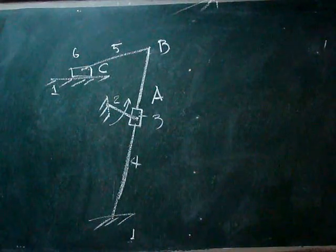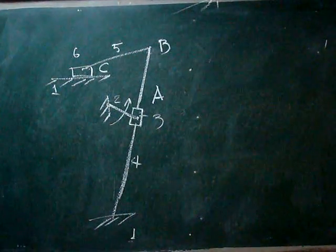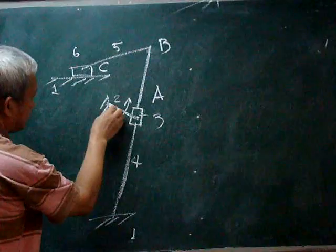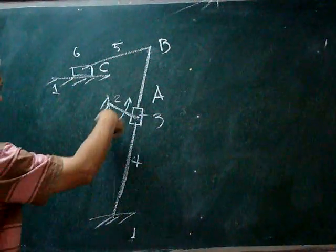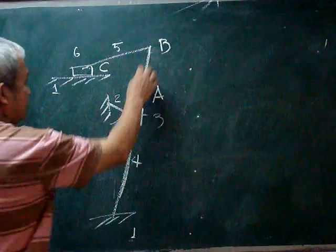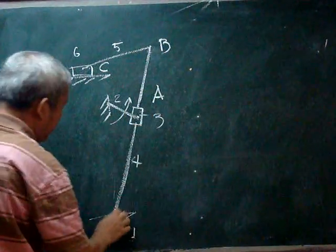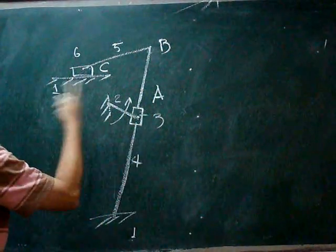In this mechanism, we have body 2 here, which is rotating. And as it rotates, body 4 will be oscillating.